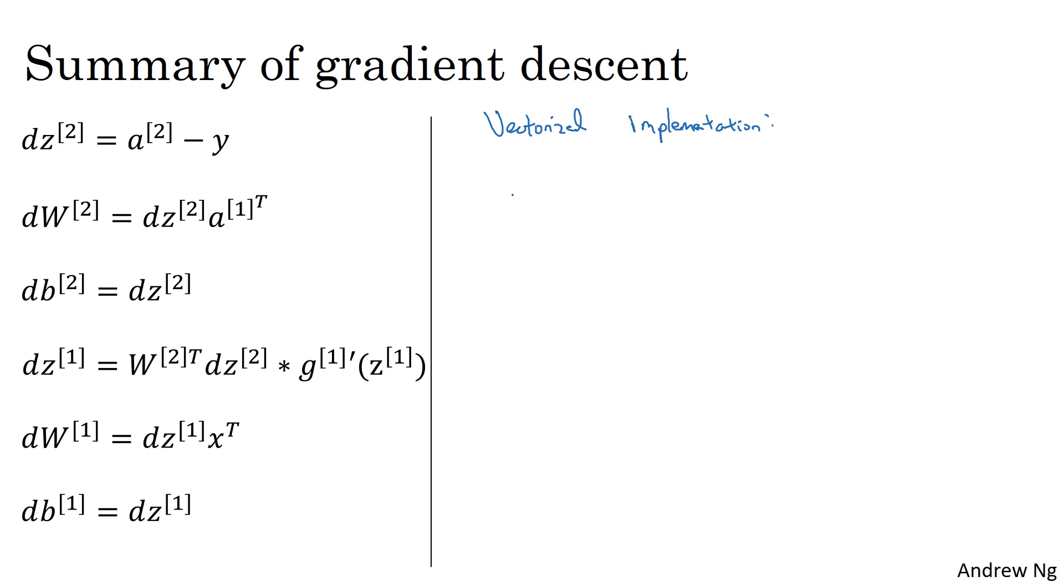Remember that for forward propagation, when we're operating on one example at a time, we had equations like this, as well as a1 equals g1 of z1. In order to vectorize, we took the z's and stacked them up in columns like this.